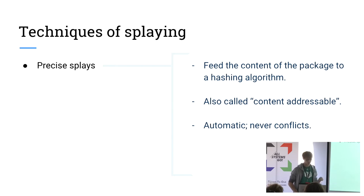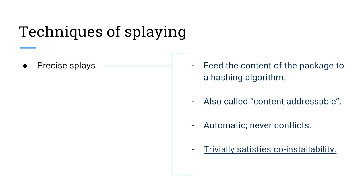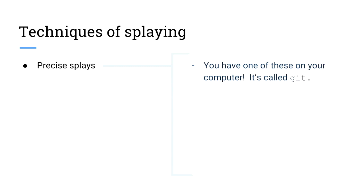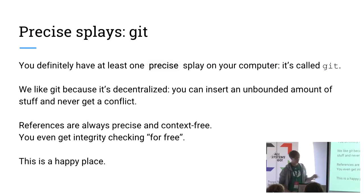This is a nice way of organizing information because it's completely automatic and basically immune to conflict. Going back to the reason we're talking about any of this — a precise splay, something content addressable, trivially satisfies co-installability. If I have more than one version of a library and add however many more versions, I will never conflict. So this means I can automate everything with this organization. You have one of these on your computer — it's called Git. We tend to like this for all of the same reasons.